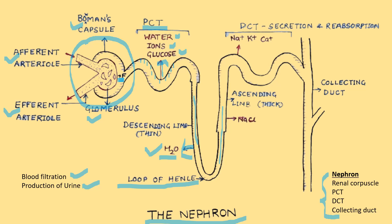In contrast, the ascending limb is impermeable to water but actively transports ions such as sodium and chloride out of the tubule. The distal convoluted tubule, also known as the DCT, is responsible for further reabsorption and secretion. It regulates the concentration of ions such as sodium, potassium, and calcium, and the pH of urine through selective reabsorption and secretion.